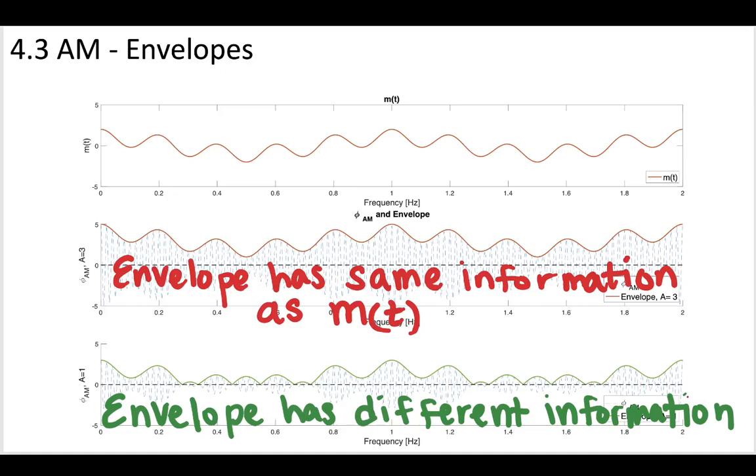However, when your A was small, the envelope of the modulated signal, so the top of each one of these oscillations, this is the envelope, and it is going to contain different information.